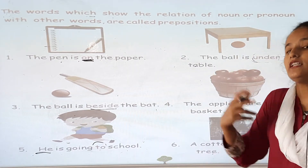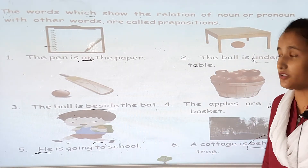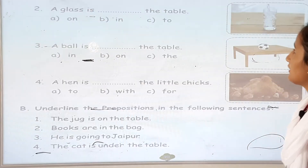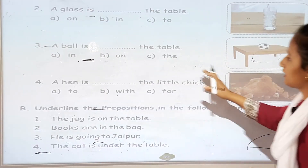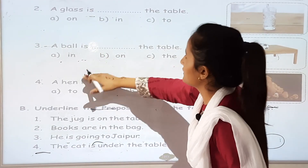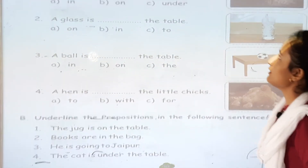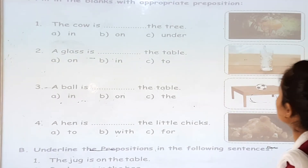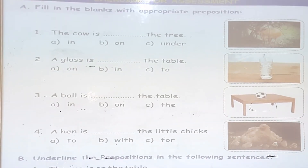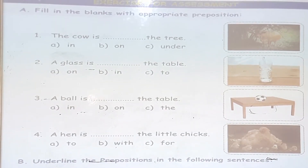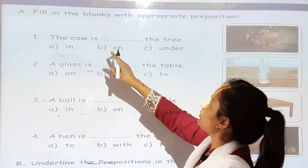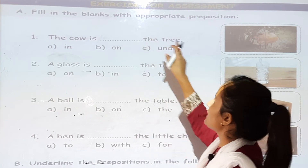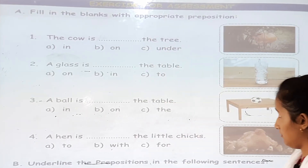That's how prepositions show the relations of a noun and pronoun with other words — they relate words to each other. Now on the next page you can see a fill-in-the-blanks exercise with appropriate prepositions. The cow is dash the tree.